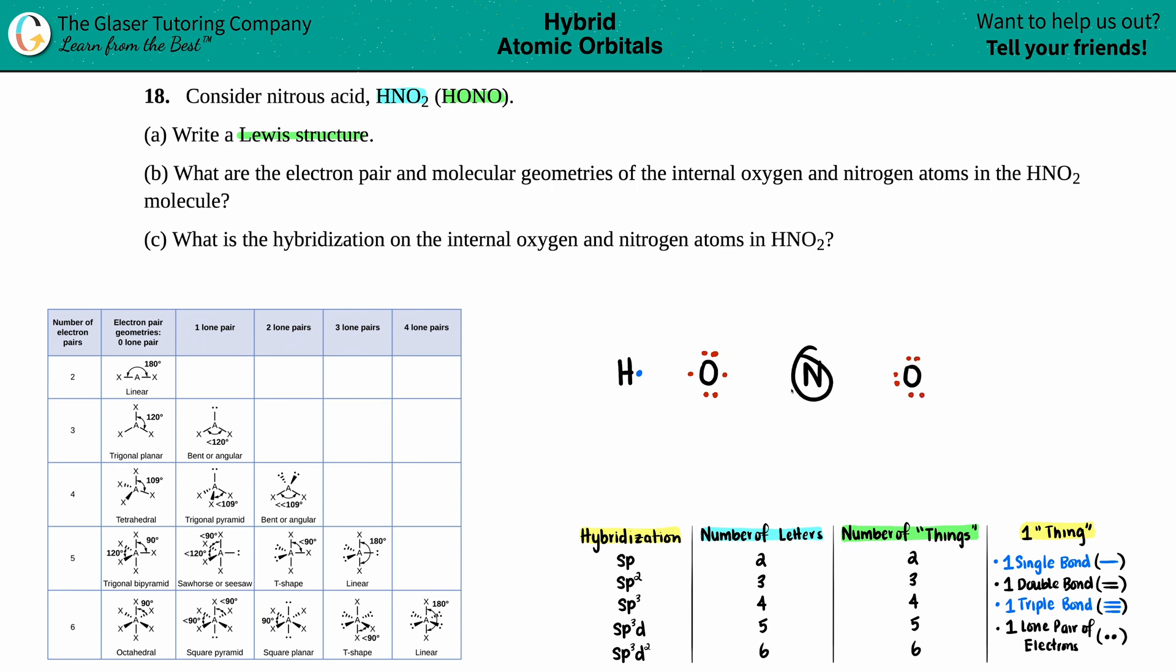Nitrogen is in group 15 or 5A, so it's got five valence electrons. So I'll say one, maybe I'll do one, two, three, four, five.